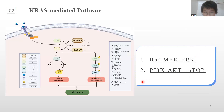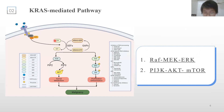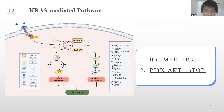Now let's talk about the KRAS-mediated signaling pathway. Upon stimulation of EGFR, KRAS is turned on by GEF. KRAS-GTP initiates downstream signaling pathways including RAF, MEK, ERK, PI3K, AKT, and mTOR signaling pathways, which are responsible for cell proliferation, cell survival, and metabolic changes, etc.